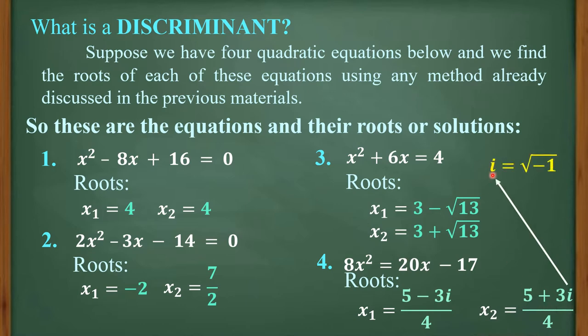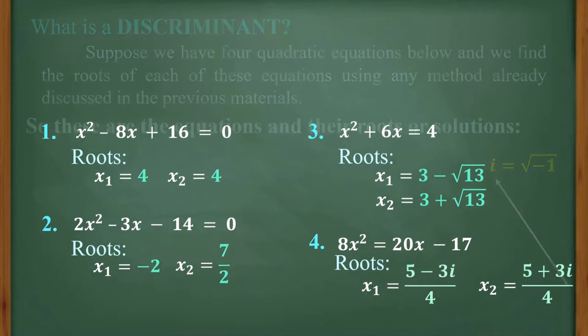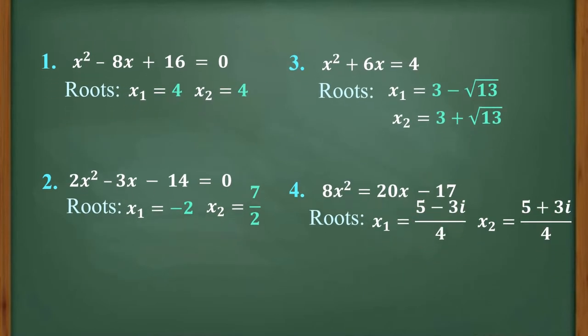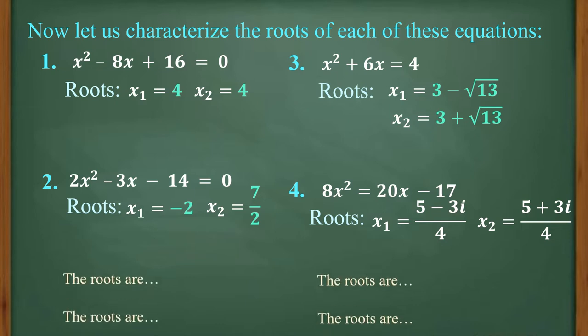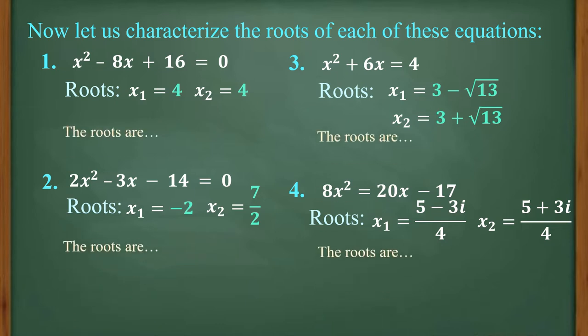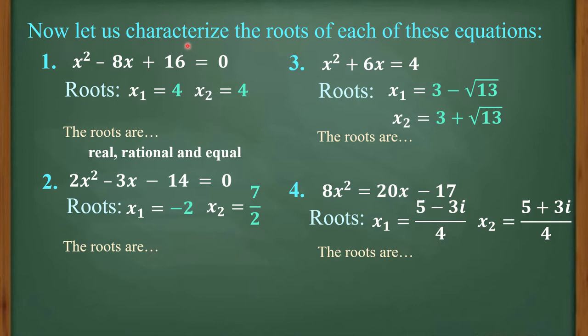Take note that i means the square root of negative 1. Let us now characterize the roots of these equations. For number 1, x squared minus 8x plus 16 equals 0, notice that there are 2 roots but they have the same value. So we can say that these 2 roots are real, rational, and equal.